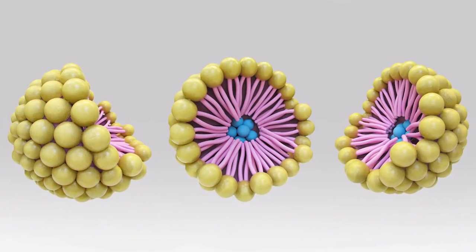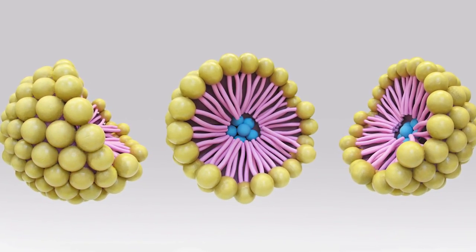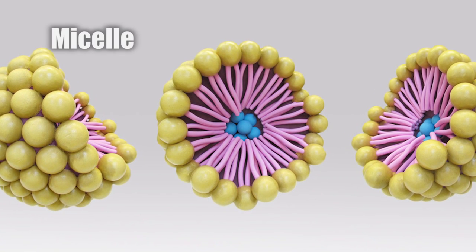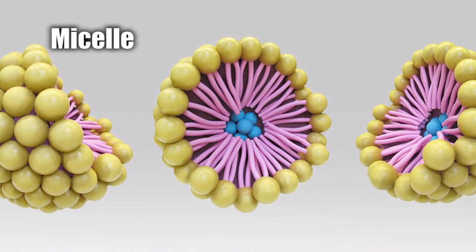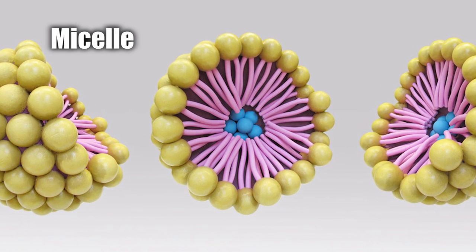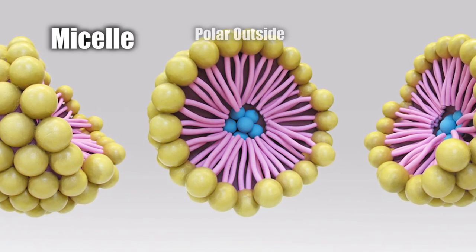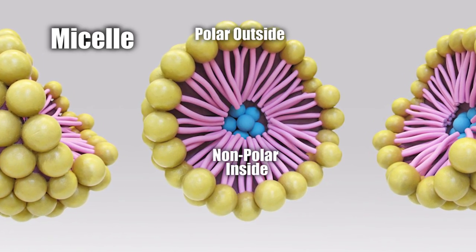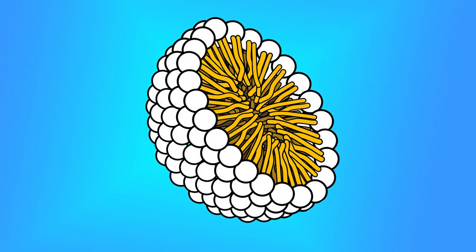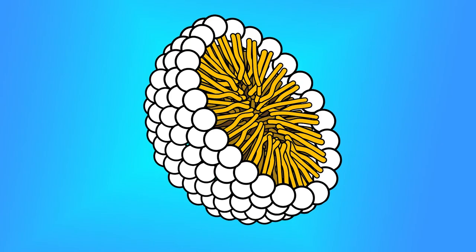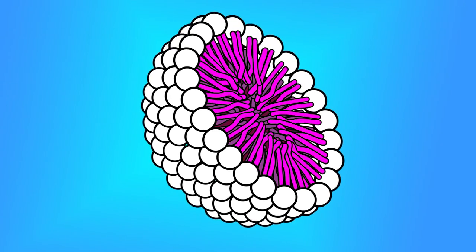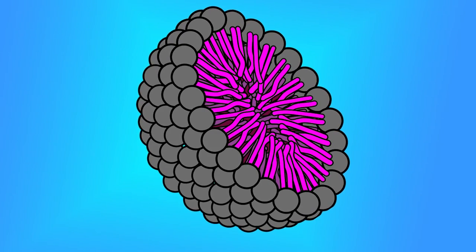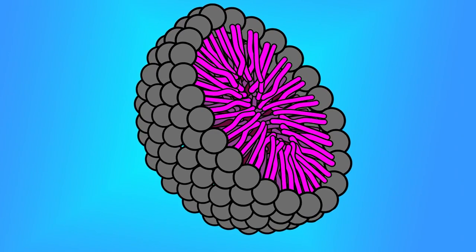If enough soap molecules are present, they can form what's called a micelle — a kind of hollow sphere with a polar outside and a non-polar inside. The fact that this object, a micelle, has both an inside and an outside is what allows soap to function.